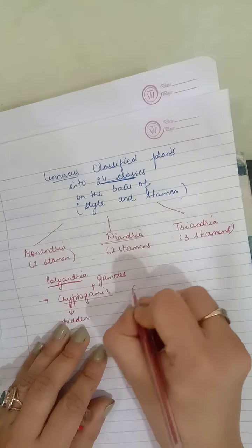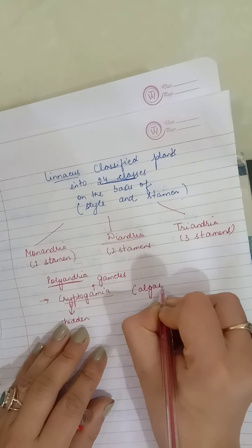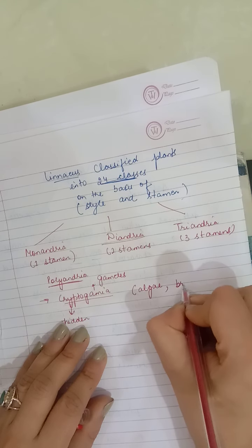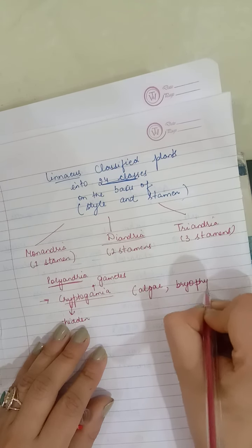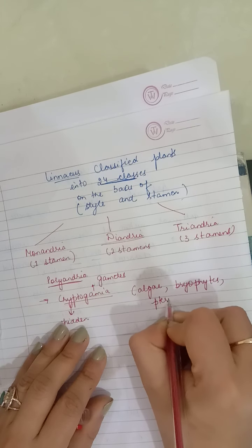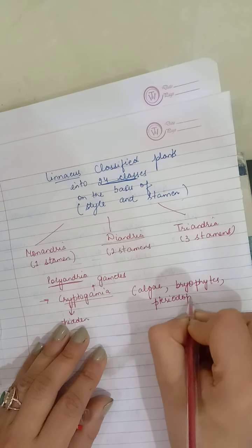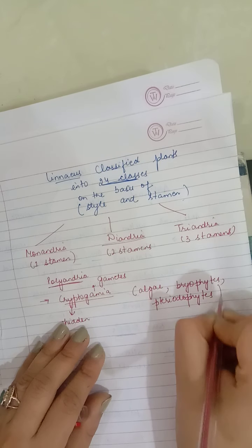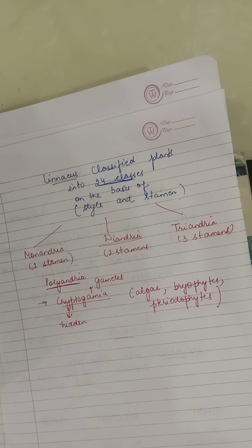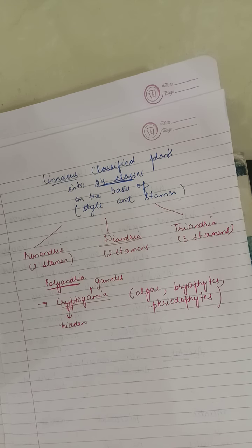Cryptogamia refers to organisms with hidden gametes — like algae, bryophytes, pteridophytes, and even fungi. These are the lower organisms grouped under Cryptogamia.